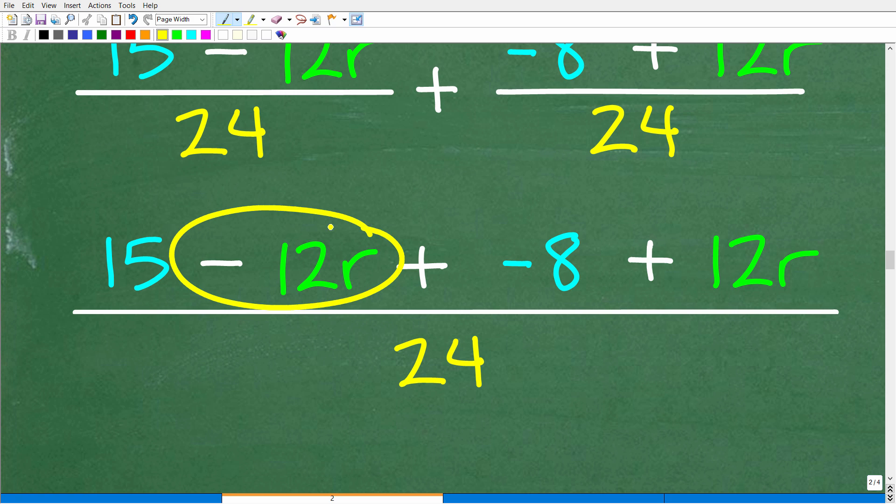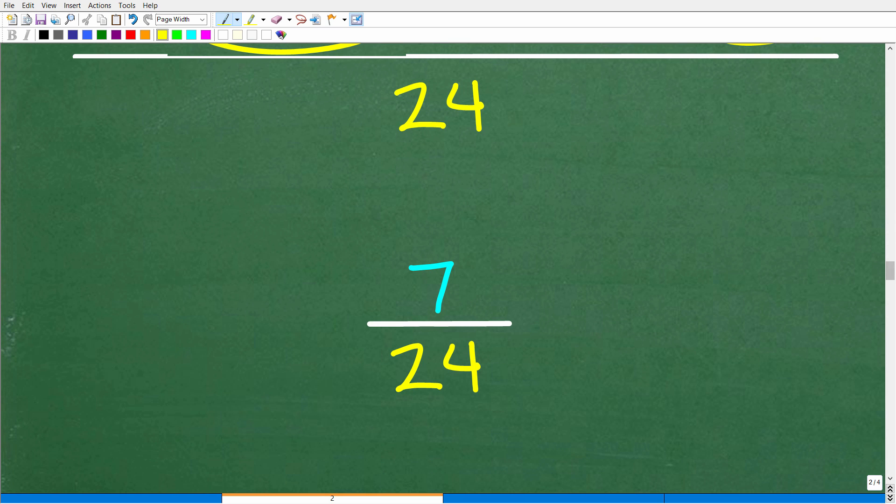So here is the situation. We have 15 minus 12R plus negative eight plus 12R. So we can see here, boy, we can just cross cancel these 12Rs. They go away. And now we have 15 minus eight, which of course is seven over 24. And this fraction can't be reduced. And that is how you do this algebra problem.